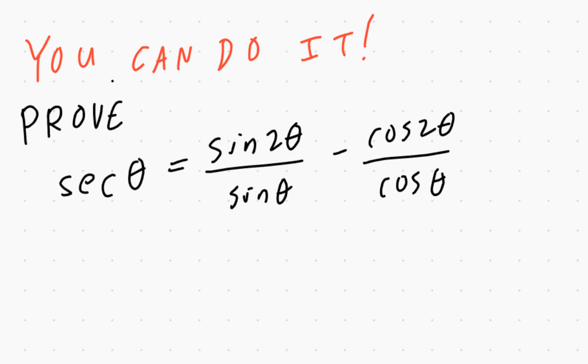Hi everyone. Let's take a look at the following. Prove: sec θ = sin(2θ)/sin θ - cos(2θ)/cos θ.